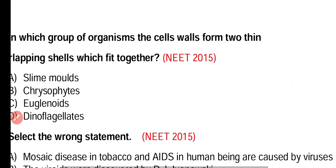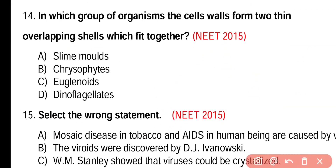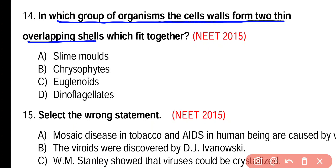Question number 14. In which group of organisms do cell walls form two thin overlapping shells which fit together? Slime molds, chrysophytes, euglenoids, or dinoflagellates. Correct answer is option B. In chrysophytes, which are golden brown algae, cell walls form two thin overlapping shells which fit together like a petri dish.